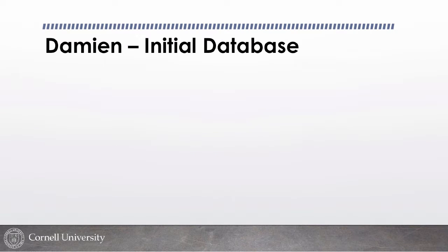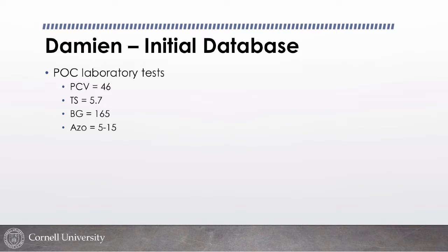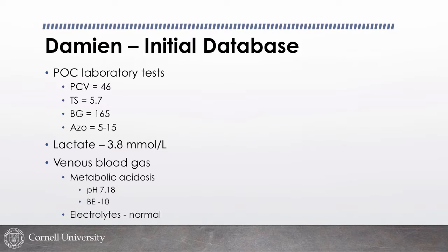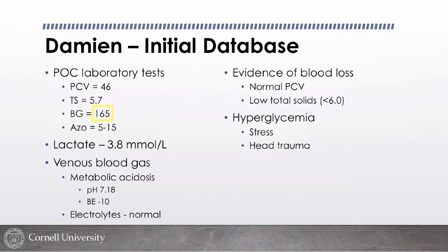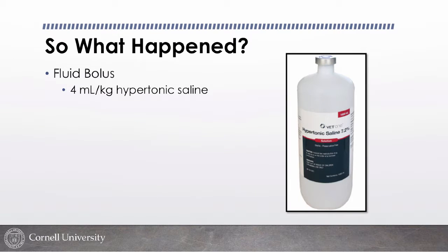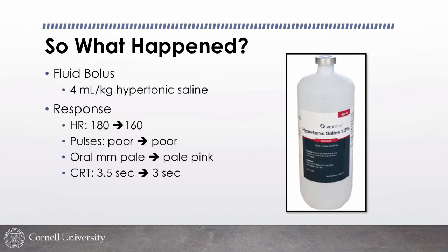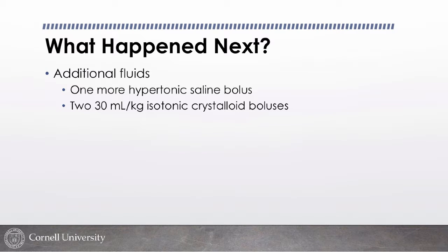Damien's initial database: PCV 46, total solids 5.7 — consistent with acute significant hemorrhage. Blood glucose elevated, likely stress response. Lactate 3.8 — mildly elevated, consistent with hypovolemic shock and lactic acidosis. Electrolytes normal. He received a 4 mL/kg hypertonic saline bolus. Response: heart rate came down from 180 to 160, pulses still poor, mucous membranes minimally improved. So we gave him more fluids — another hypertonic saline bolus plus isotonic crystalloids, totaling about 60 mL/kg of isotonic fluids over the next hour.